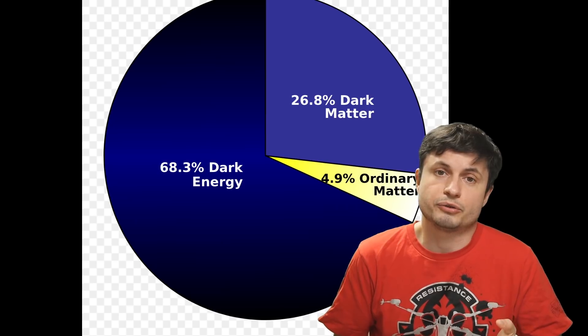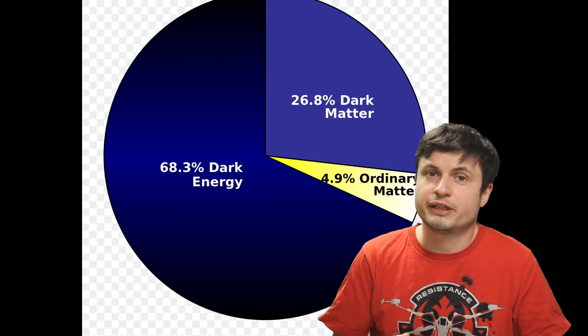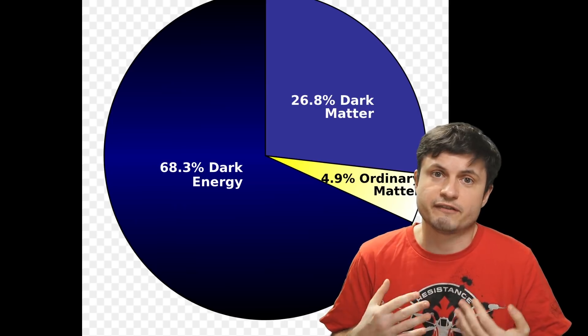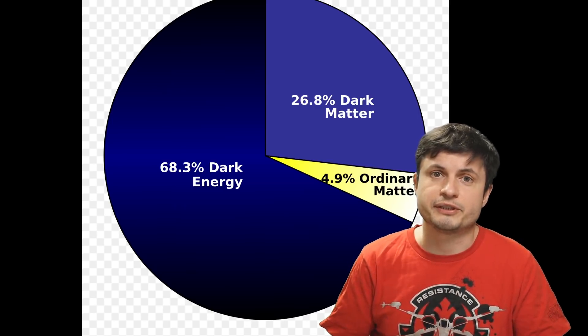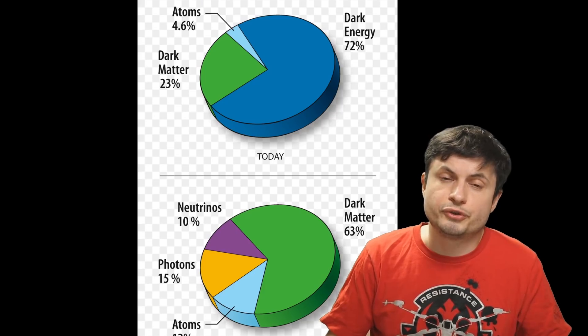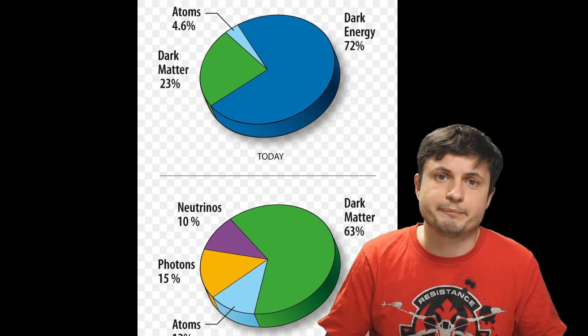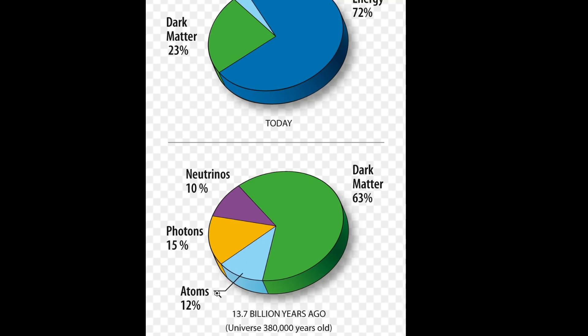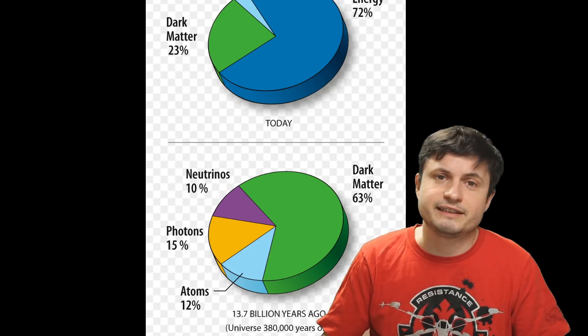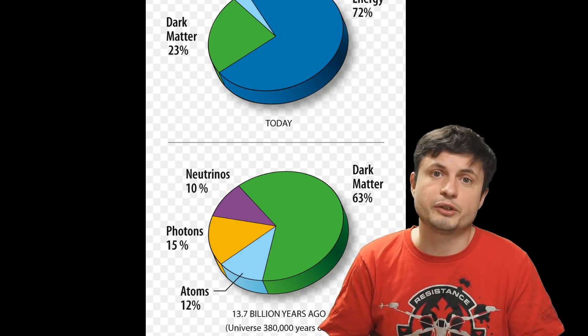With some of the estimates varying a little bit. So here about 27% is dark matter, about 5% is regular matter, so basically stuff we're made out of, and about 70% is dark energy. These numbers do vary a little bit from study to study, but overall they are usually about the same. And in case you were curious, about 12% of regular matter are atoms, 15% are photons, and about 10% are neutrinos. At least that's what it used to be like when the universe just started.